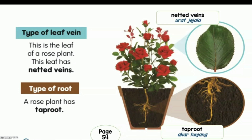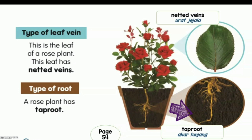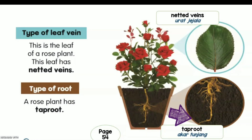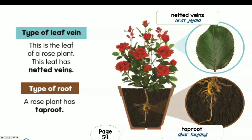A rose plant has a taproot — pokok bunga ros berakar tunjang. Look at the roots: the primary root grows vertically downwards — akar induknya tumbuh ke bawah.